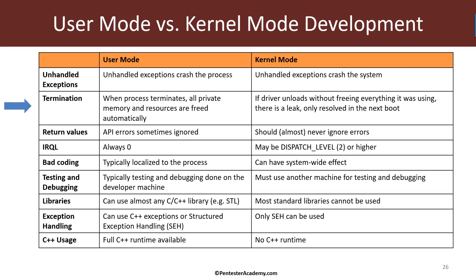Now let's look at termination. Whenever a process terminates — for whatever reason — all private memory for the process is freed, all handles are closed, and so on. Nothing remains of that process once it's gone. It doesn't matter whether the process exited cleanly, due to an unhandled exception, or was terminated abruptly. Nothing remains from that process.